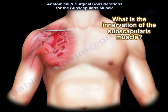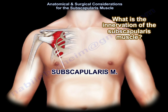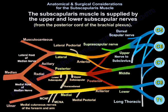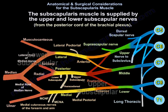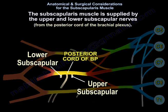What is the innervation of the subscapularis muscle? The subscapularis muscle is supplied by the upper and lower subscapular nerves, which come from the posterior cord of the brachial plexus.